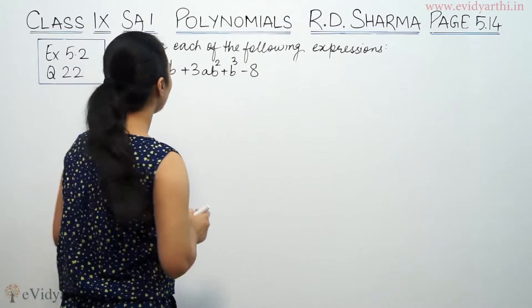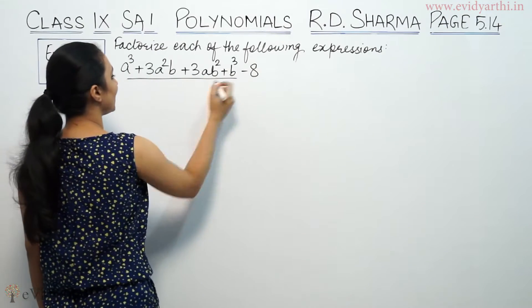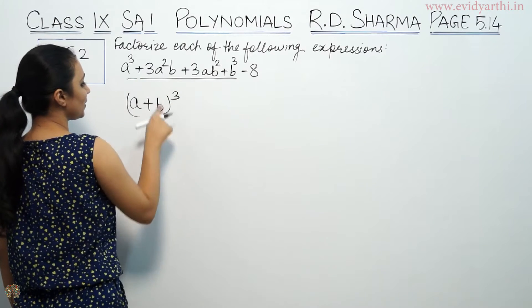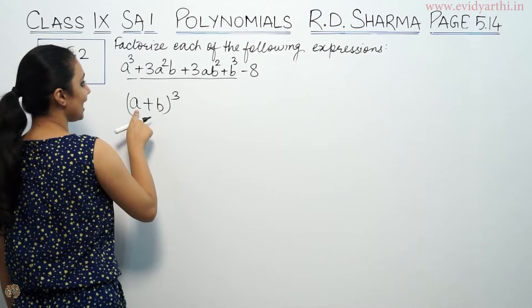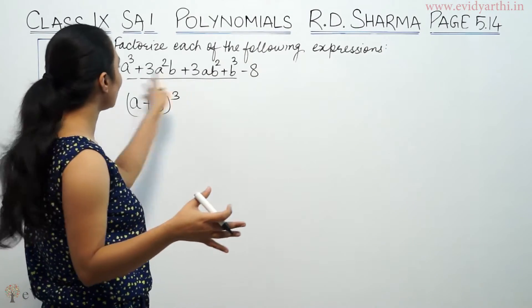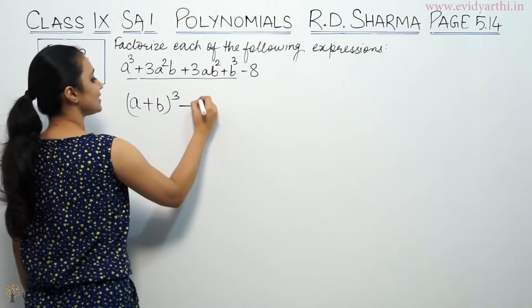You have to factorize. So when you have this portion given, a³ + 3a²b + 3ab² + b³ - 8, this is basically (a + b)³. Because a³ + b³ + 3a²b + 3ab², this formula will be learned from (a + b)³. So this is the same formula minus 8.